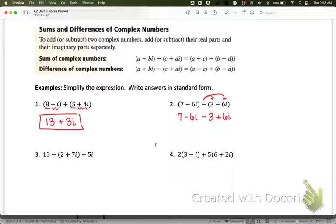And now I'm ready to combine my like terms. So 7 minus 3, that gives me positive 4. Negative 6i plus 6i, those two are going to make 0. And 0i is just 0. So all I get is 4. Here's the case where I added two complex numbers and the result was actually just a real number.